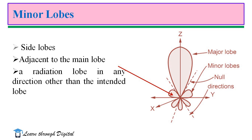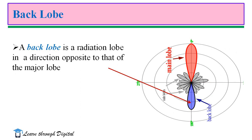The minor lobe is also called radiation in the undesired direction. Side lobes and back lobes are called as minor lobes. Side lobes are lobes adjacent to the main lobe — that is, a radiation lobe in any direction other than the intended or desired direction. The blue color portion represents the back lobe, which is a radiation lobe in a direction opposite to that of the major lobe.